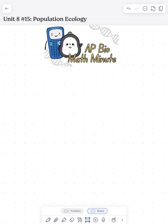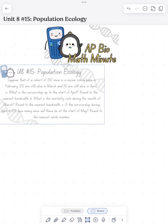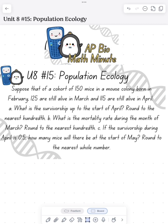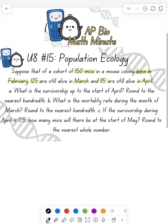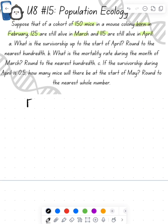Today we're going to do a math minute looking at population ecology. We have a cohort of mice that was born in February, so we started with 150. At the beginning of March we have 125, and at the beginning of April we have 115. Let's take inventory to make sure we know all those numbers: February was 150, March is 125, and April is 115.